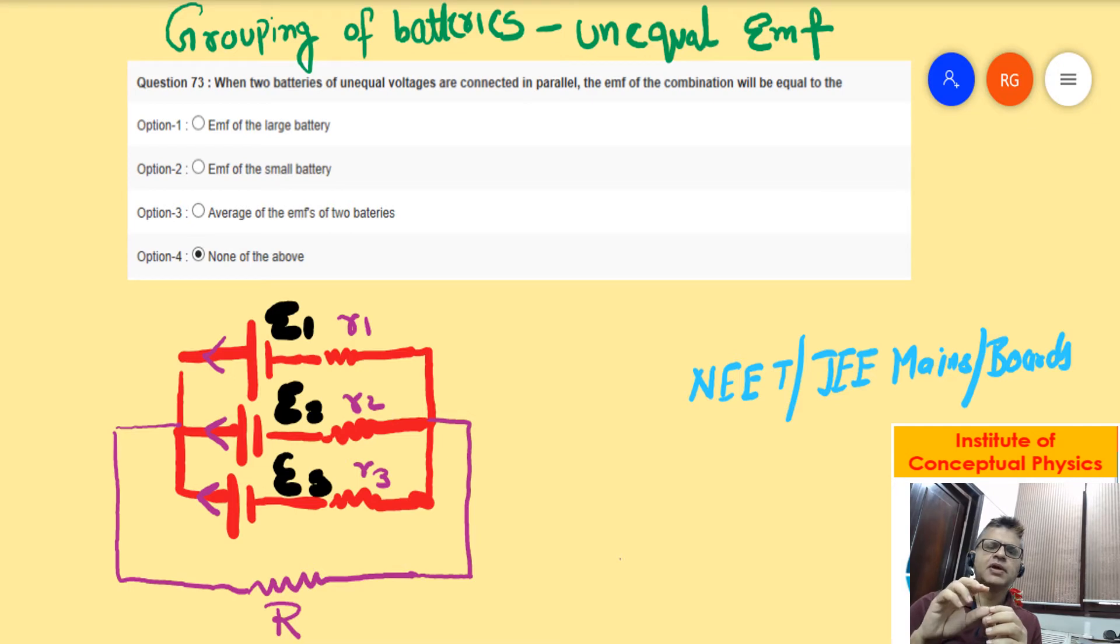Each branch will give you some current because of that battery, and each branch becomes a source of a pump which is pumping out current. So all the currents get added at the junction.